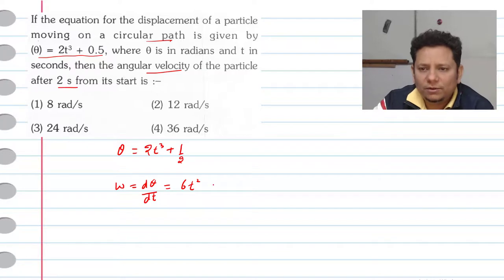Aapne ko pata hai 2 seconds per value kya hogi. Toh yahaan peh t ki value 2 rakh denge. So 6 multiplied by 2 ka square. So aapki omega, which implies omega aapka ho gaya 6 foja 24 radian per second.